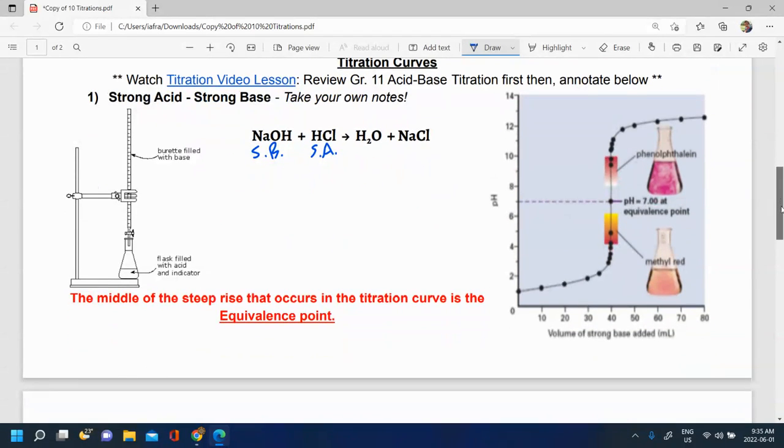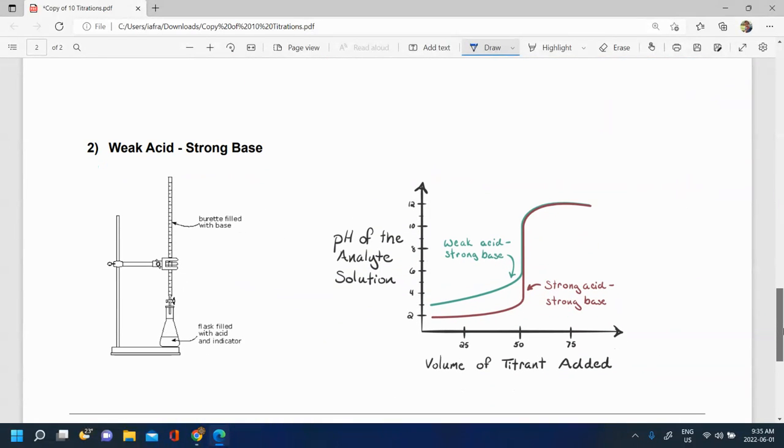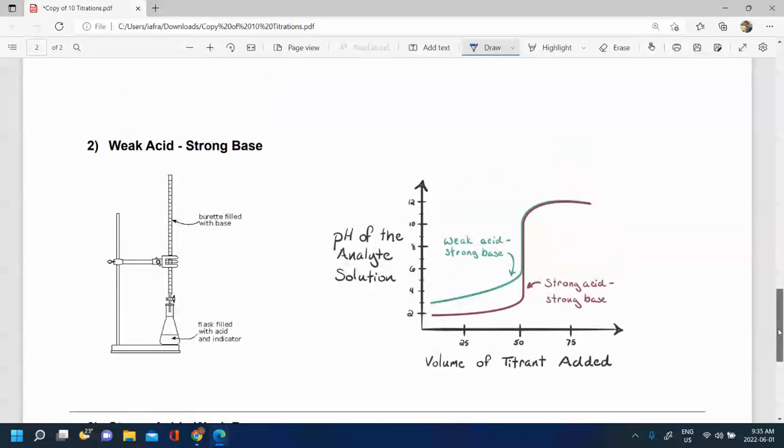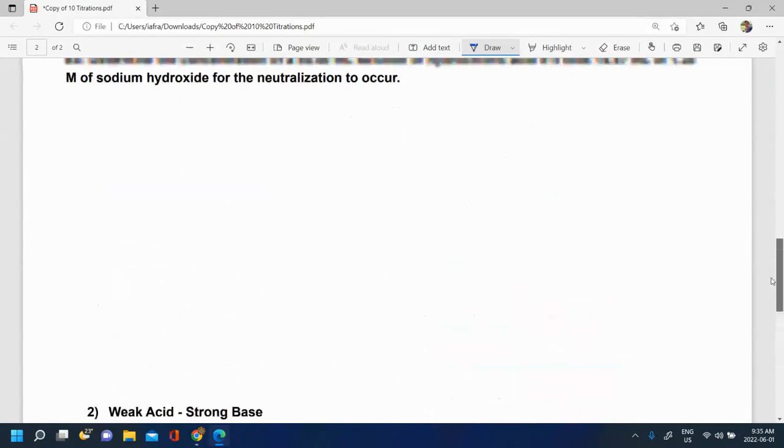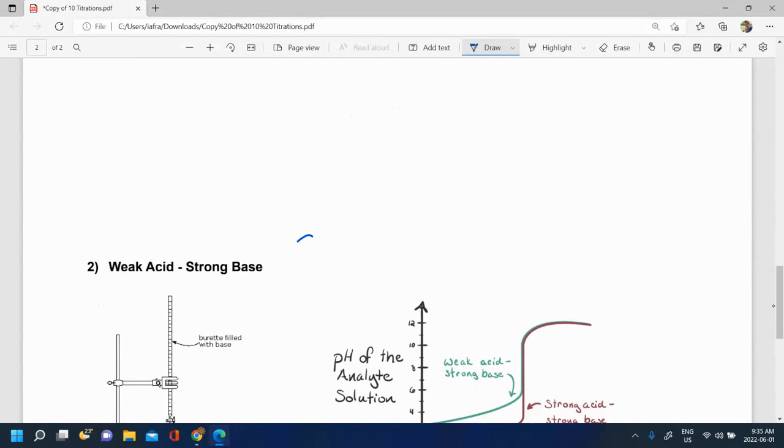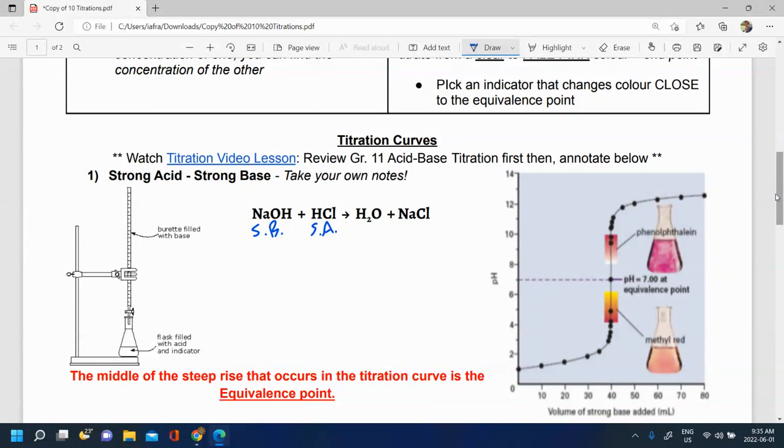And then after that, once we understand this and have reviewed this sufficiently, you're going to start doing titrations at the grade 12 level, which is no longer strong and strong, but instead you might have a strong base weak acid titration or a weak base strong acid titration. So that's what the grade 12 style titration looks like, whereas grade 11 was strong and strong. So in the next video, we're going to do an example of a grade 11 style titration, a strong acid titration with a strong base.